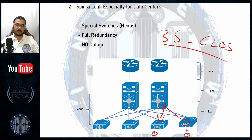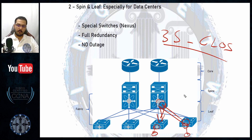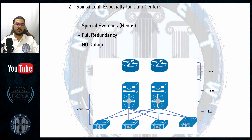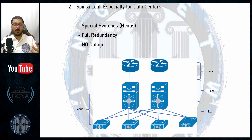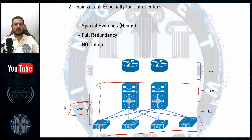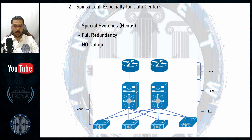The movement of leaf → spine → leaf is called the three-stage Clos design, where a server must pass three hops to reach another server. To reach the internet, traffic goes upstream via the spine. These devices provide full redundancy, no outage, and very fast convergence, but they require very specific environmental conditions: controlled temperature with hot and cold aisles, moisture control, and fire suppression systems. These two layers — leaf and spine — are called the switching fabric of the data center. Remember that term in case it appears on the exam.